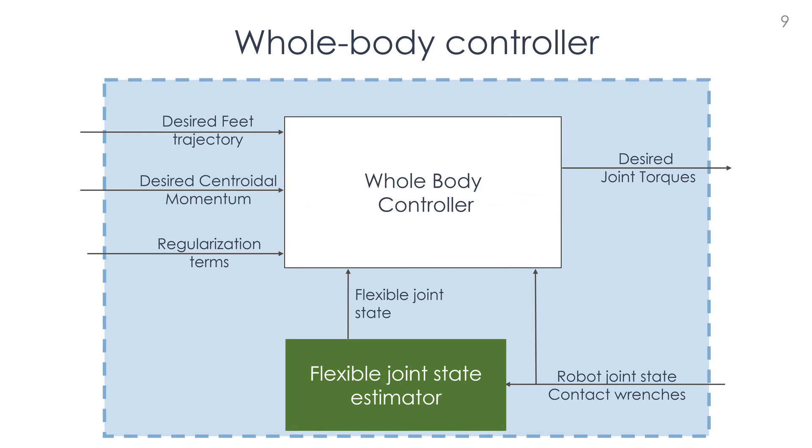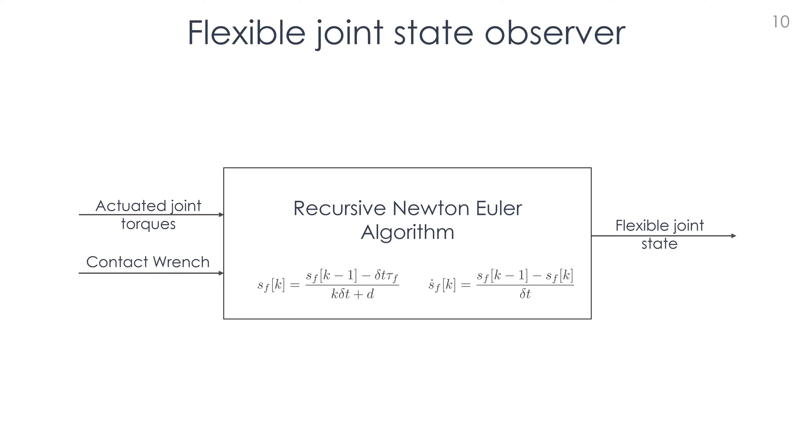This motivates why we design a flexible joint state estimator. What we propose is a slightly modified version of the recursive Newton-Euler algorithm, that considers the actuated joint torques and the contact wrenches, and its output is the flexible joint state. Indeed, once the recursive algorithm has estimated the flexible joint torque, we exploit the flexible joint position and velocity approximation to construct the estimated state.